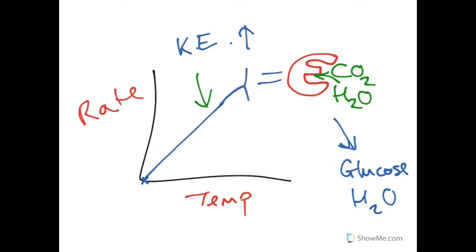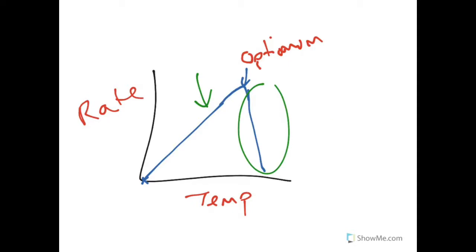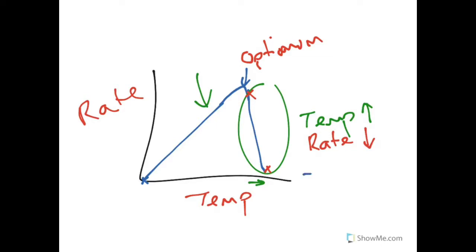Then we have the optimum temperature, the peak of the graph. A common student mistake is to describe the last part of the graph incorrectly. In that part, temperature is still increasing but the rate of photosynthesis goes down. The reason is that the enzyme is denaturing, meaning the substrate no longer fits into the active site.